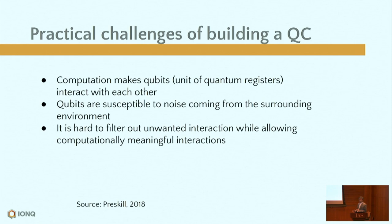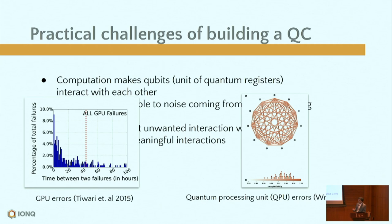Building quantum computers is very hard. Logical operations involve letting qubits interact with each other in a very precise and controlled way, but they are very sensitive to noise — you must protect them from unwanted interference. This tug of war is very challenging to implement at the hardware level. In GPUs you can compute for hours without issue, but on quantum computers — our chip has 11 qubits with nodes as individual qubits and edges as possible logical operations — each operation has some error.